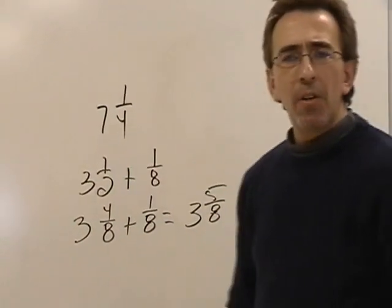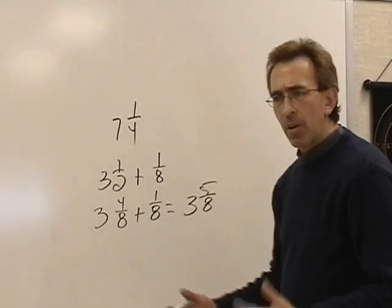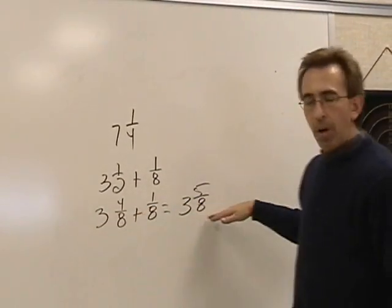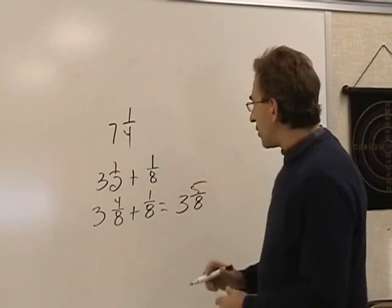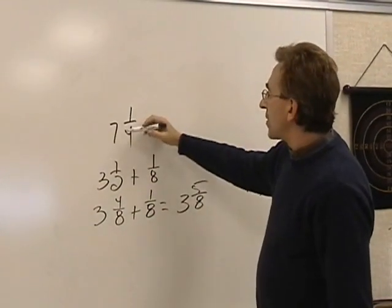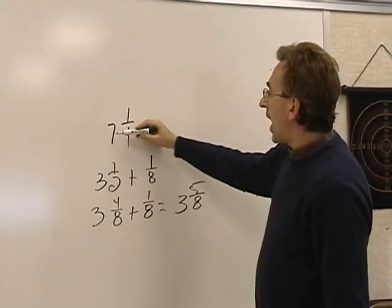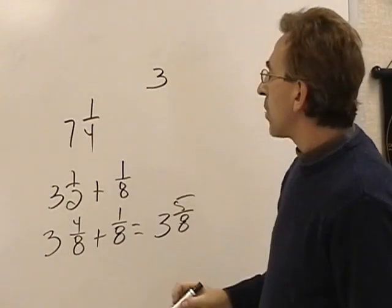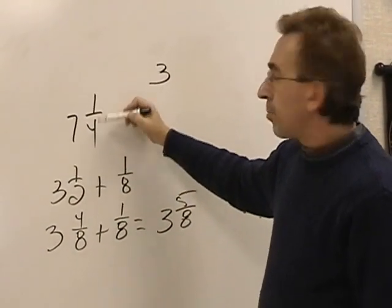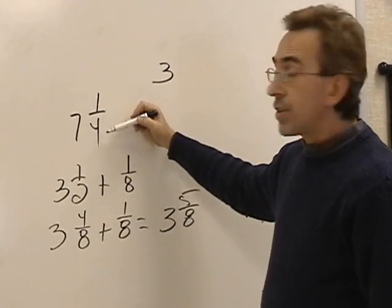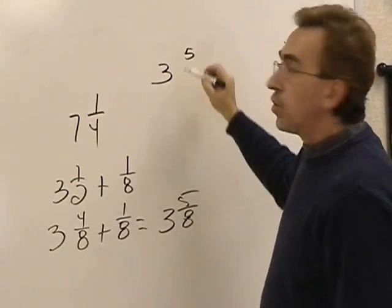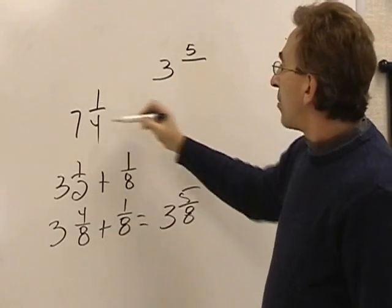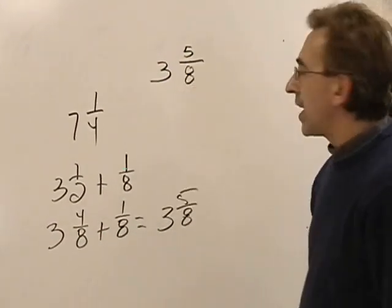But I was grading papers one day, and I noticed a pattern. So I started messing around with it, and I realized that we can skip all of this. All we have to do is take the 7, half of 7 is going to be 3 and something. We know that. So write down the 3. Then if we take the 4 plus the 1, the old numerator, and add it to the old denominator, and make that the new numerator, double the bottom, we end up with the same answer.